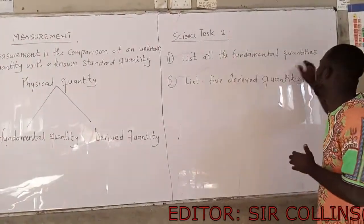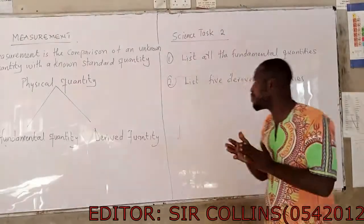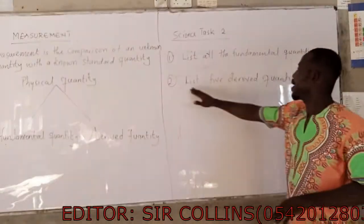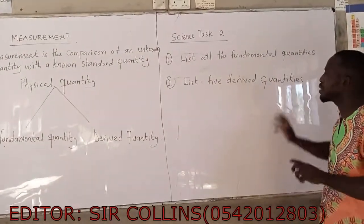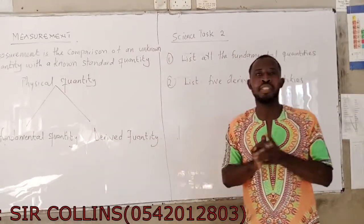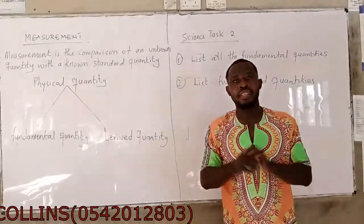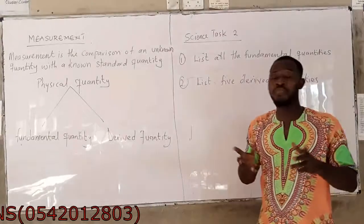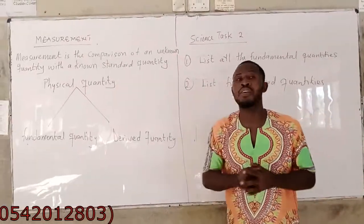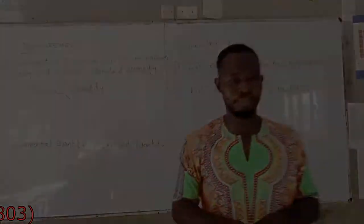Assignment for today: list all seven fundamental quantities, and list five derived quantities — that is also very easy. I will see you in the next lesson. Enjoy yourself. It has been a facilitator session for RSK. Thank you.